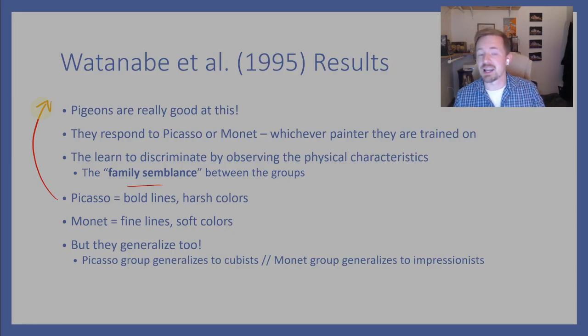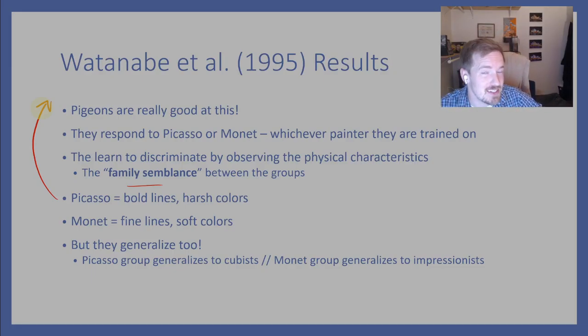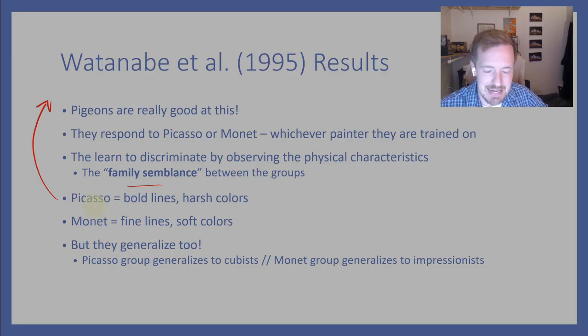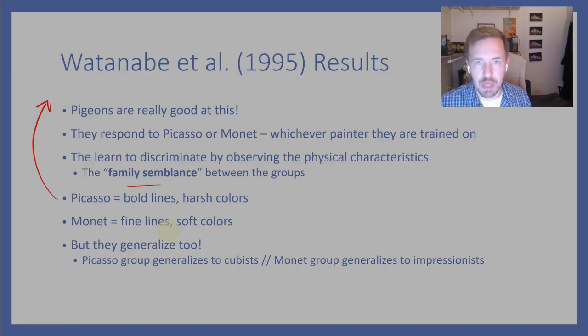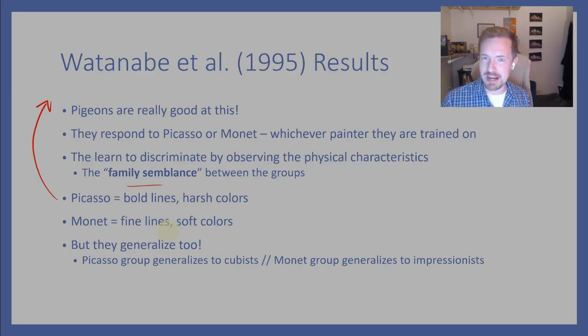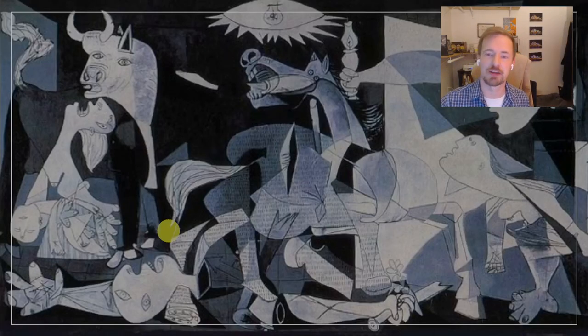So who cares? These pigeons are just responding based on stimuli they've been trained on. But I think the important point is: is it really all that different from how you learn this? The only difference, in my opinion, is that it's easier for us because I can tell you 'this is Monet because he used watercolors and painted harbors and gardens and was an impressionist.' But when I use that language, all I'm really doing is pointing out the family semblance — the physical characteristics — so you don't have to figure it out by trial and error.